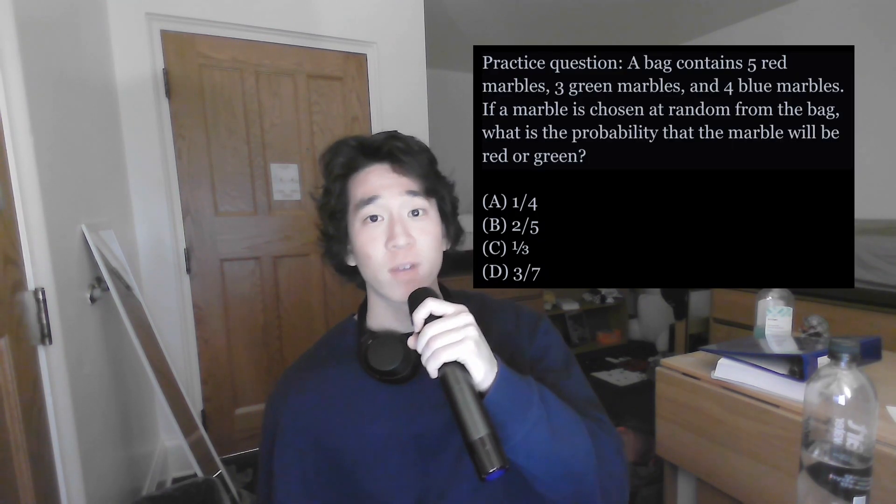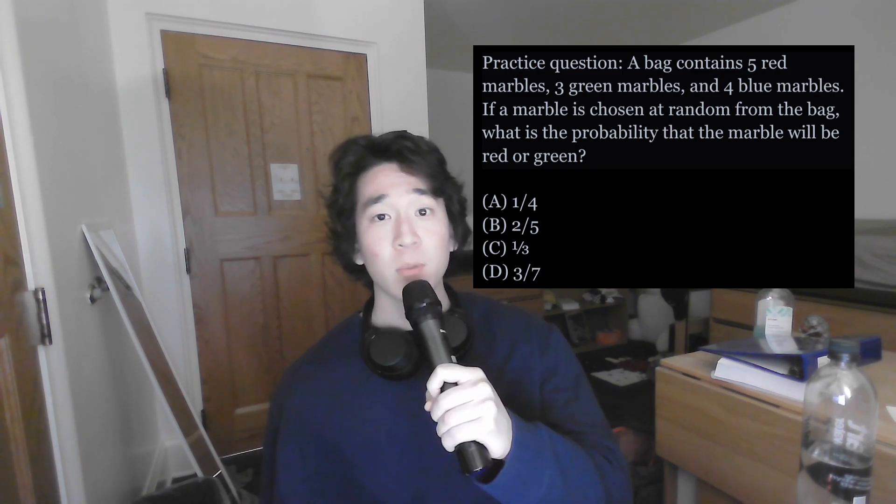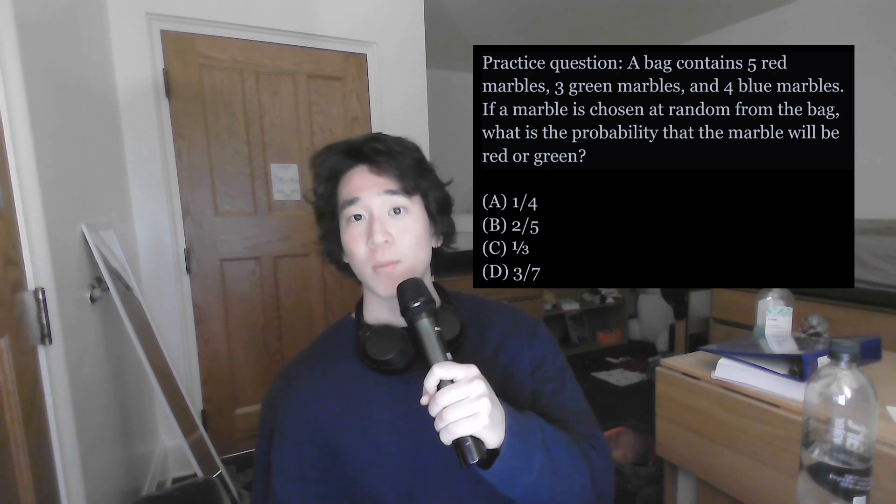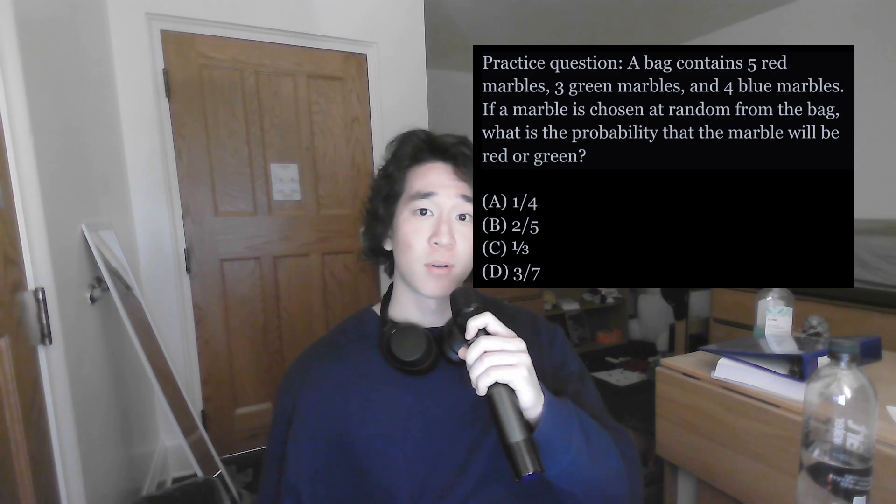Let's take this practice question. A bag contains five red marbles, three green marbles, and four blue marbles. If a marble is chosen at random from the bag, what is the probability that the marble will be either red or green? All you have to do is take the number of desired outcomes and divide it by the number of total outcomes, which comes out to be 5 plus 3 over 12, or two-thirds. Now let's say you were someone taking the SAT for the very first time, compared to someone who took multiple practice exams and has already taken the exam two times. This type of question was likely seen by the latter at least a couple of times during practice, which means he knows the type of problem and the structure it's asking for, so he'll take less time to figure out what the question needs and how to answer it.